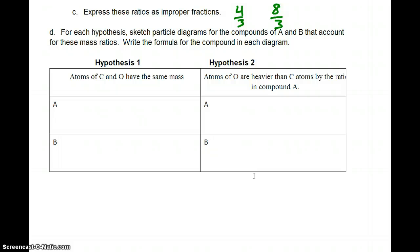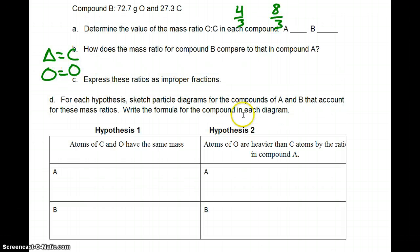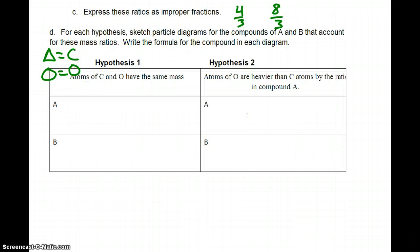So if atoms of C and O have the same mass, then if I use, let's say, a triangle for carbon and a circle for O, then that means I would have, I forgot which one was which. Yeah, 4 O's compared to 3 C's. And on this one I would have 8 O's compared to 3 C's.